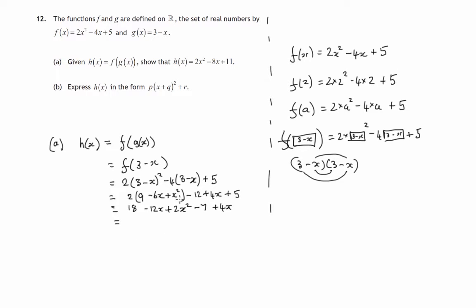So finally, let's look at the x squared terms. There's only one of them. And there's a coefficient of 2, so 2 lots of x squared. We've got a minus 12x plus a 4x, which is a minus 8x. And we've got an 18 minus a 7, which is 11. And now we'll just check. That's indeed what we were supposed to get.